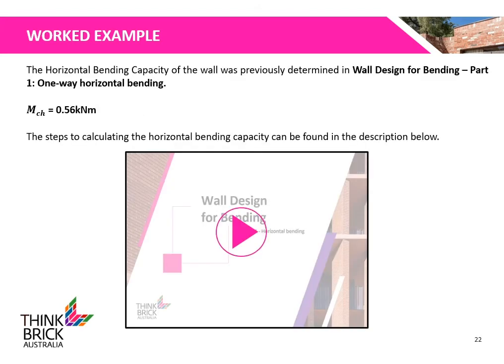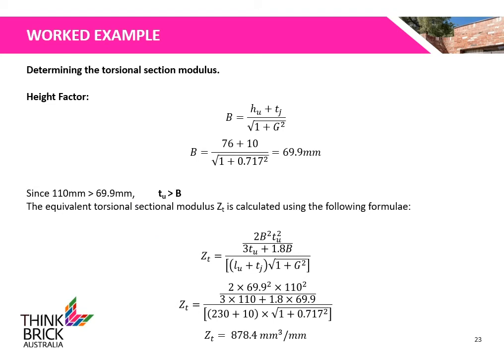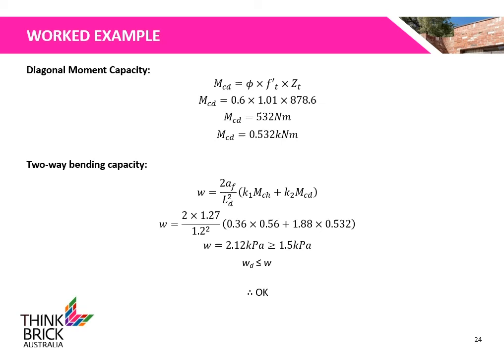The horizontal bending capacity of the wall was calculated to be 0.56 kNm, which can be found in the Wall Design for Bending Part 1 presentation on one-way horizontal bending. A detailed explanation of the steps involved while calculating the horizontal bending capacity can be found in the description. Here, we determine the torsional section modulus. Using the cracked slope and brick unit dimensions, we find that the height factor is 69.9 mm. As the unit thickness is greater than the height factor, the equivalent torsional section modulus ZT is calculated to be 878.4 mm³ per mm. Using the capacity reduction factor of 0.6 for bending, the diagonal bending moment capacity MCD is calculated to be 0.532 kNm.